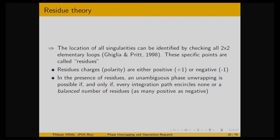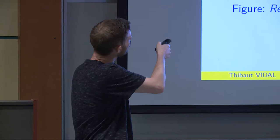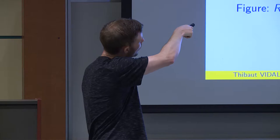On a noisy signal, positive residues (where the integral around 4 pixels sums to 2 pi) are shown in red, and negative ones in blue. With moderately white noise, negative and positive residues tend to appear close to each other, always in pairs. What you must forbid is passing between two residues that are paired — this is what you should prohibit to recover the real signal.